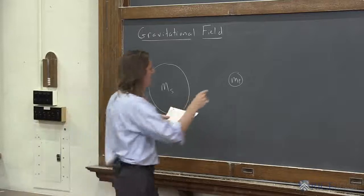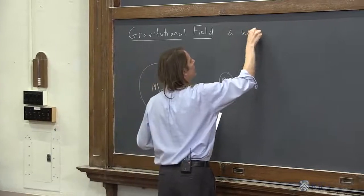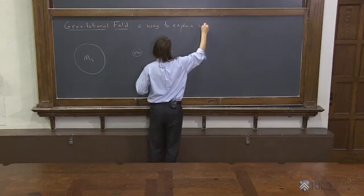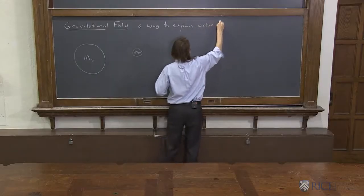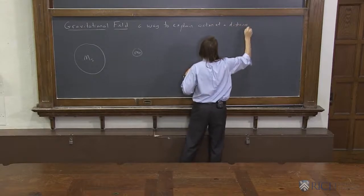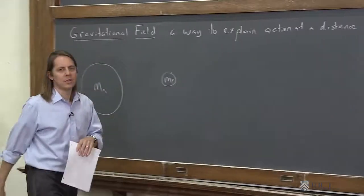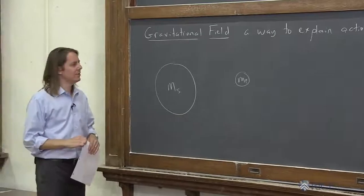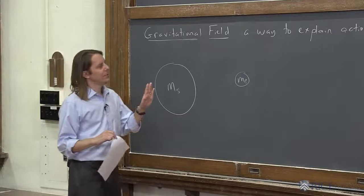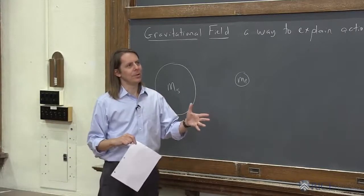So the concept of the field is a way to explain action at a distance. That was the phrase we use, this mysterious action at a distance. Maybe it's angel wings and all these kinds of ideas came along. Really, the idea of a field explaining it isn't from Newton.